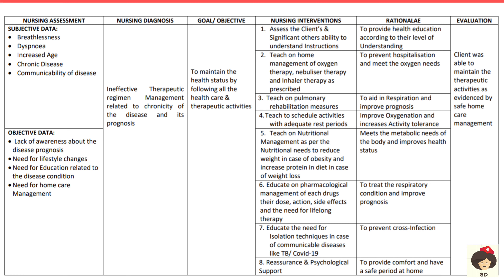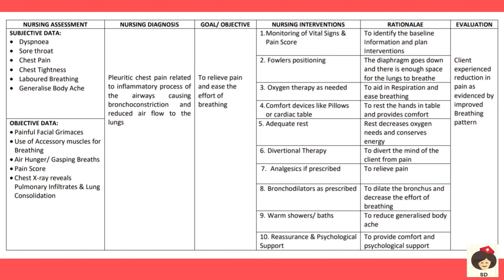Patient education should cover all medications so they can be taken as advised at home to improve respiratory function. Educate about isolation techniques for communicable diseases like TB or COVID-19 — hand hygiene, universal precautions — to prevent infection at home. Reassurance and psychological support should be provided, along with information about follow-up schedules. Evaluation: patient is able to maintain therapeutic activities as evidenced by self-care management. The patient can also have pleuritic chest pain related to the inflammatory process of the airways causing bronchoconstriction and reduced airflow.